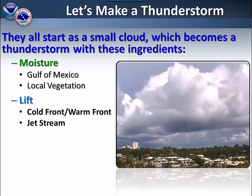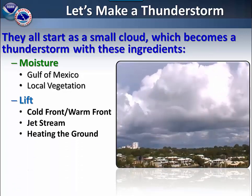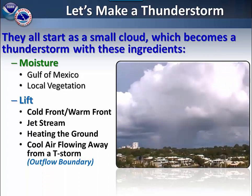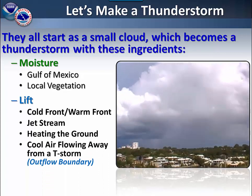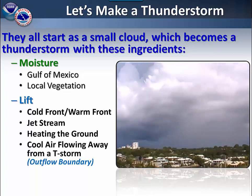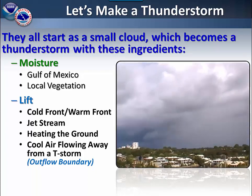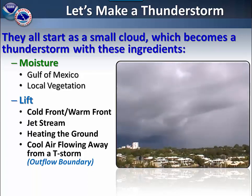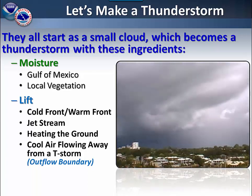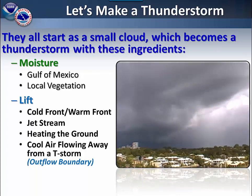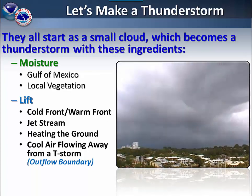Thunderstorms also need lift. This can come from either cold or warm frontal boundaries, from the jet stream, heating of the ground, and cool air flowing away from a thunderstorm — this is known as an outflow boundary. These boundaries can persist for several hours or even into the next day, continuing the severe weather threat.